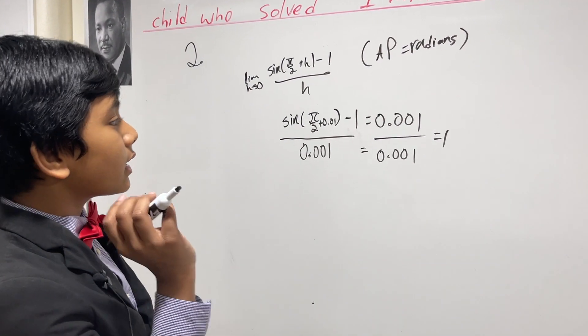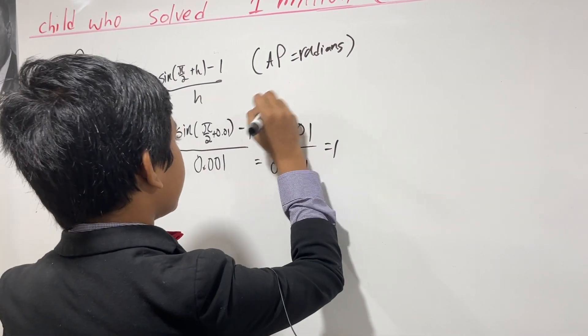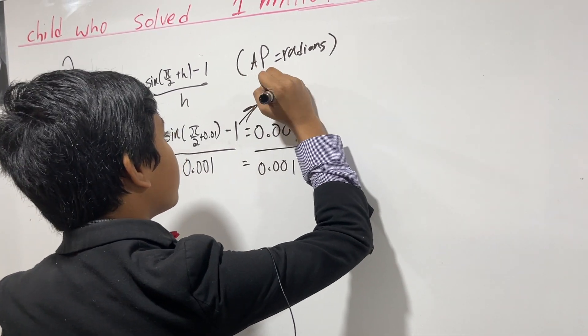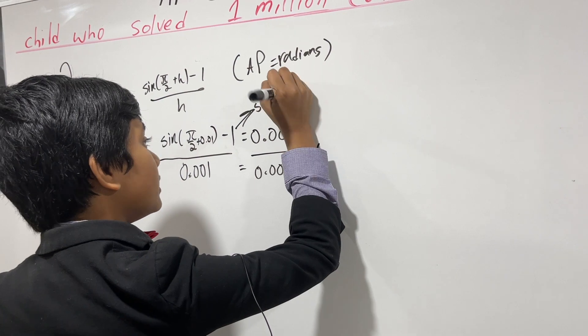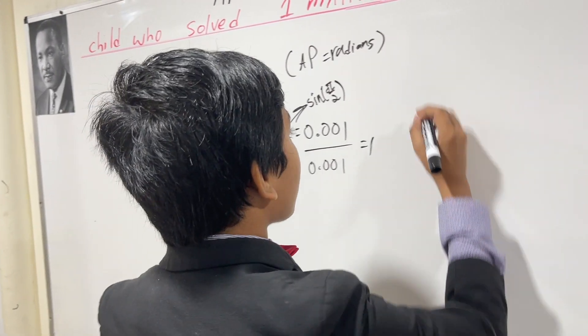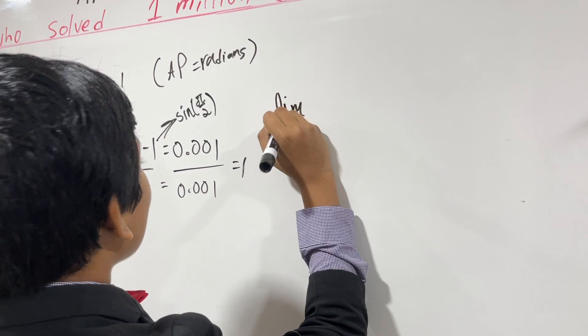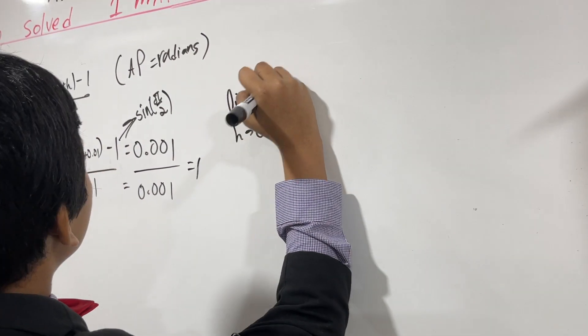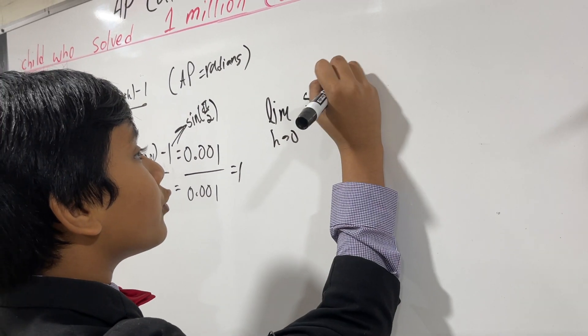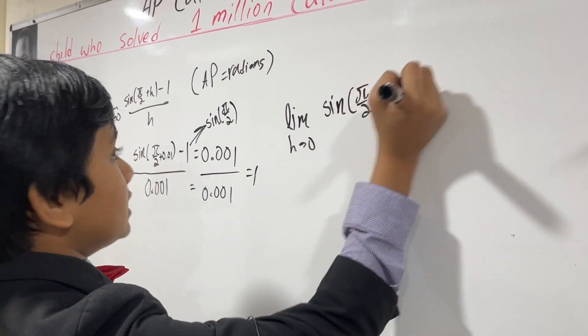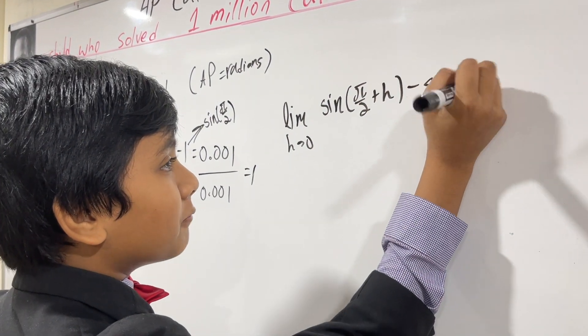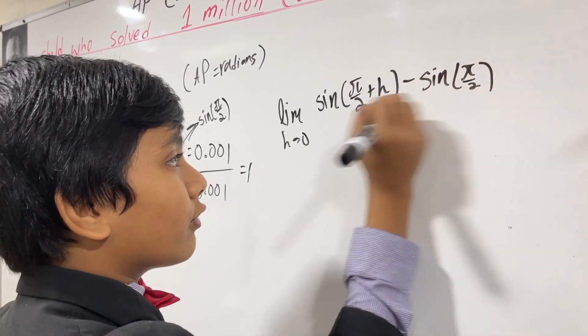But the crucial thing comes in realizing that 1 is sine of pi over 2. Because when you realize that, let's try to rewrite the equation. The limit as h equals zero of sine pi over 2 plus h minus sine of pi over 2 over h.